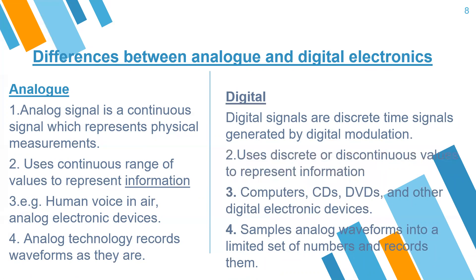Number three: examples of analog include human voice and analog electronic devices. Examples of digital include computers, CDs, DVDs, and other digital electronic devices. Number four: in analog technology, records are stored as they are. In digital electronics, it samples the analog waveform into a limited set of numbers and records them.